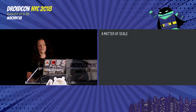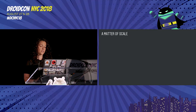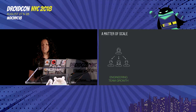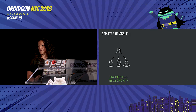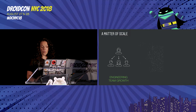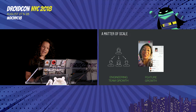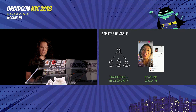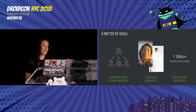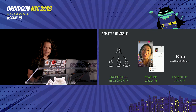Let me start with an overview of Instagram's scale to set the scene for why modularization is important to us. Our engineering team has grown significantly across three offices since last year. Besides adding a wealth of new feature functionality to the app, we've started to expand into a family of apps with the recently released IGTV. Our user base continues to grow, and we just crossed a major threshold, hitting one billion monthly active people.